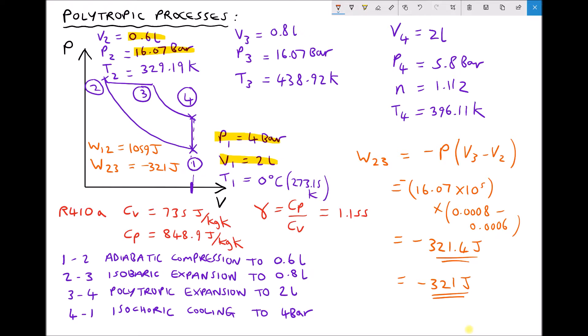So let's calculate the work moving from 3 to 4, and we know that 3 to 4 is a polytropic expansion. Okay so W3 to 4 is P4 V4 minus P3 V3 all divided by N minus 1. This time it's divided by N minus 1 not gamma minus 1 because we have a polytropic process not an adiabatic process. Now in the previous video we calculated the polytropic index moving from 3 to 4 to be 1.112. So that's the value we're going to use here.